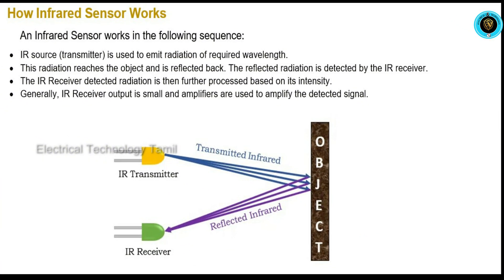The first one is the IR transmitter. In the IR transmitter, IR radiation is emitted. If the emitted radiation has been emitted by an object, it is transmitted. The transmitter transmits radiation, and the IR receiver receives it. Within the transmission range, the output voltage or radiation is displayed.